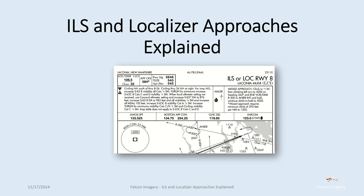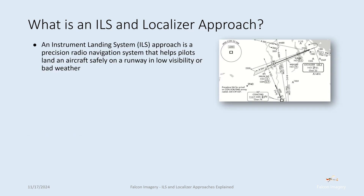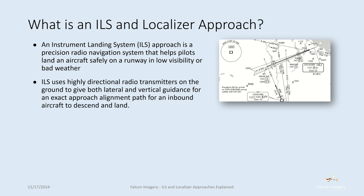ILS and localizer approaches explained. An instrument landing system, or ILS approach, is a precision radio navigation system that helps pilots land an aircraft safely on a runway in low visibility or bad weather conditions. An ILS uses highly directional radio transmitters on the ground to give both lateral and vertical guidance for an exact approach alignment path for an inbound aircraft to descend and land, resulting in a three-dimensional approach to a runway.